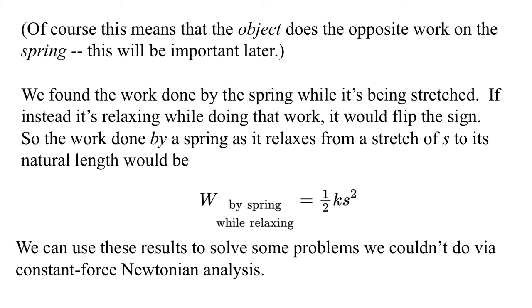Of course, this means that the object does the opposite work on the spring. The object will do positive work on the spring as I stretch it, or as the object stretches it. This will be important later when we talk about storing energy in the springs. We found the work done by the spring whilst being stretched, but if it's relaxing while doing that work, it would flip the sign. That makes sense, right? If we have the spring already stretched and we let go, it will pull the end in, and it will accelerate an object that's attached to it, so it will do positive work on that object. So we would just flip the plus to the minus, and we'd find that the work done by a spring while the spring is relaxing is 1 half k s square. And again, that same kind of format, which is going to keep coming back, but now with a positive rather than negative.